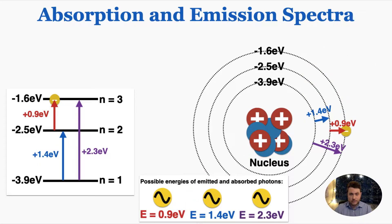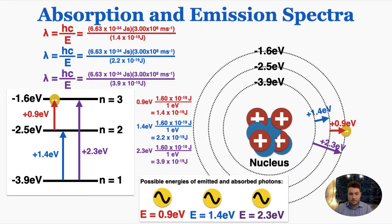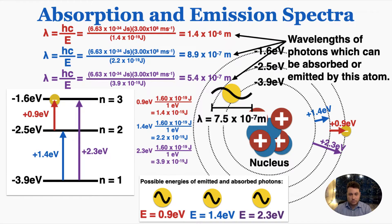In a previous lecture on photons, also linked in the description, I talked about how if we know the energy of a photon, we can automatically know its wavelength using this equation. I need to convert the energy to joules first, and when I do that I can find the wavelengths of each of the three emitted and absorbed photons. So these are the wavelengths of photons which can be absorbed or emitted by this atom. If a photon doesn't have one of those exact wavelengths, it will pass straight through the atom without being absorbed.